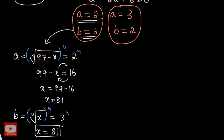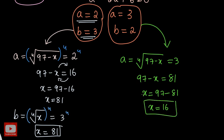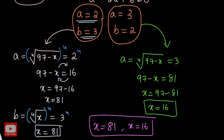Now the second set — a = 3: ⁴√(97 − x) = 3, raising both sides to the power of 4 gives 97 − x = 81, so x = 16. Trying b = 2 will also give the same result. So we get another solution x = 16. Both solutions work — you can plug them back into the equation and check.